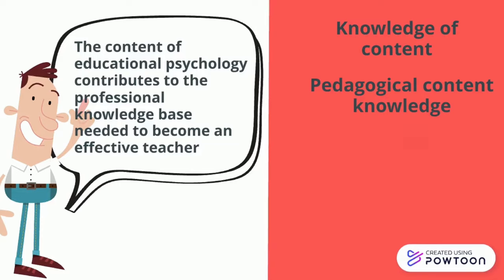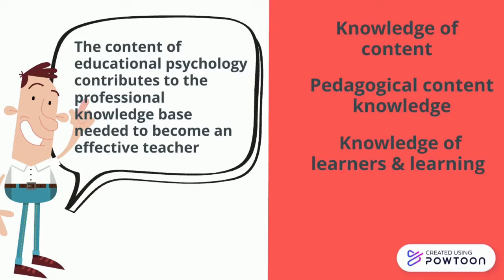Knowledge of learners and learning is the third type of professional knowledge; it is arguably the most important knowledge a teacher can have. Teachers need to know how children develop cognitively, socially, and physically in order to make decisions on what are the appropriate content to teach. Teachers also have to be aware of how students learn and how their individual differences can have an impact on their learning.